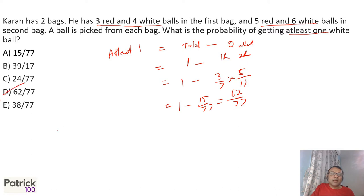You can also do it by doing one white ball. So one white, one red. First ball is white, second ball is red, or vice versa. First ball is red, second ball is white, or both balls are white because they said at least one white ball.